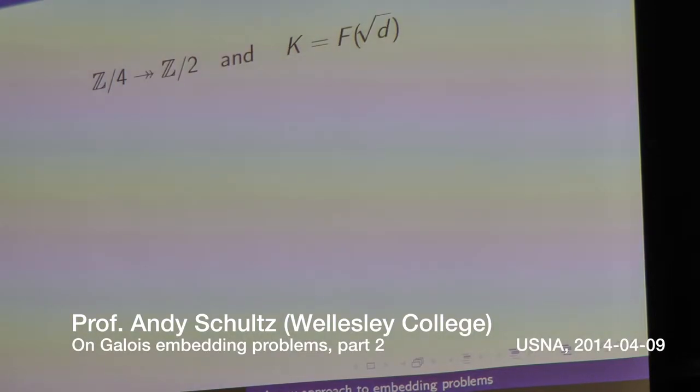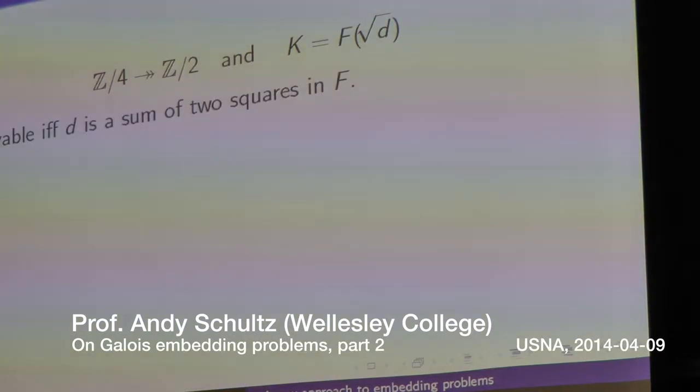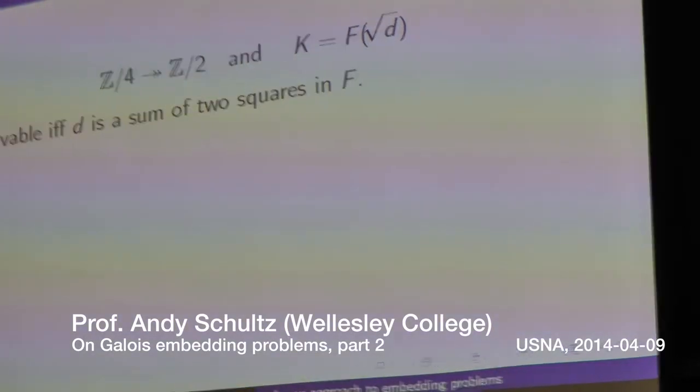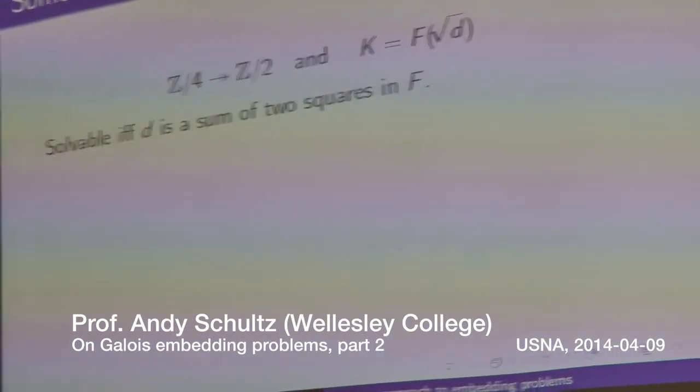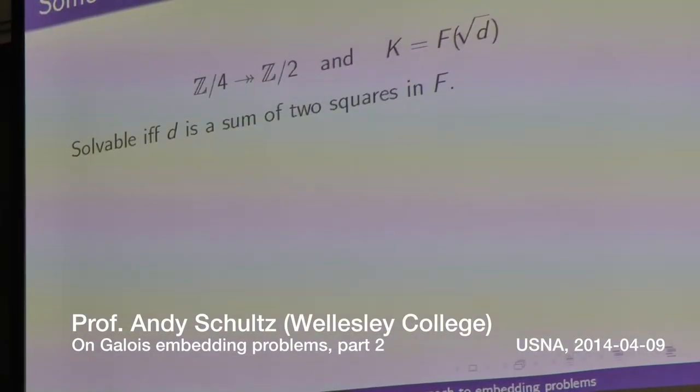It turns out that happens precisely when the number d, which generates the initial Z mod 2 extension, is a sum of two squares inside of F.